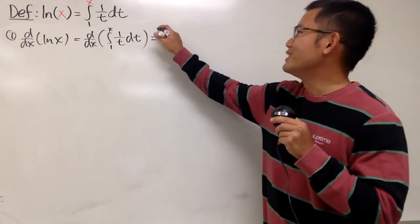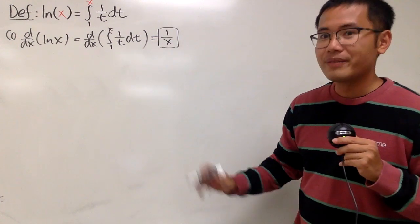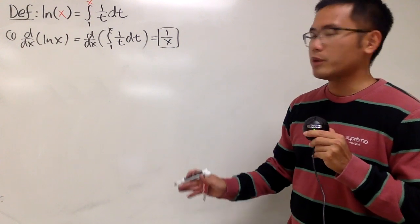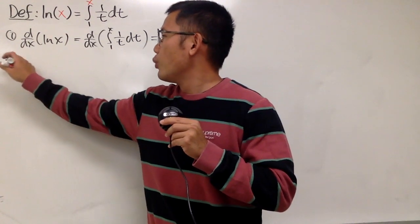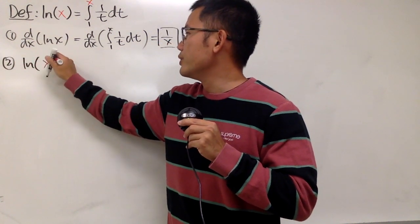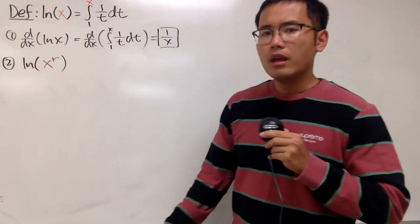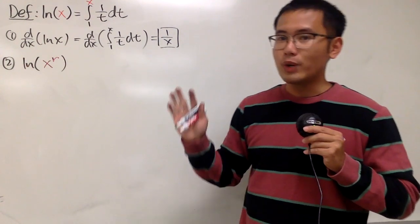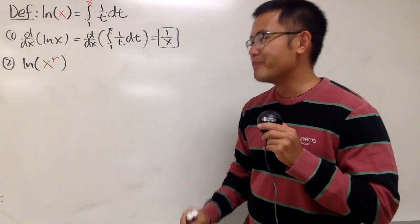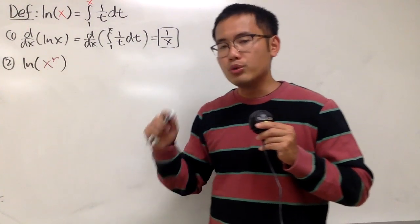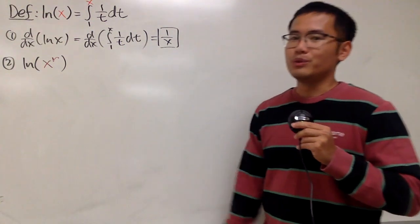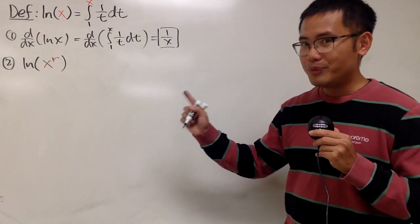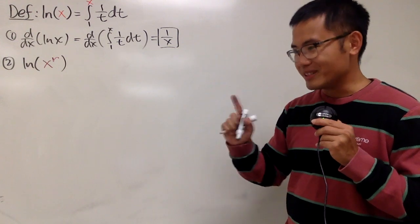Don't put down the plus c, because this is just the derivative. Now let's look at the properties. The first one: what if we have natural log of x to the r power? As we know from algebra, we can bring the r to the front — but don't subtract 1, because we're not doing a derivative yet. This should equal r times ln of x. How can we prove this? We'll do it by taking the derivative of this function.